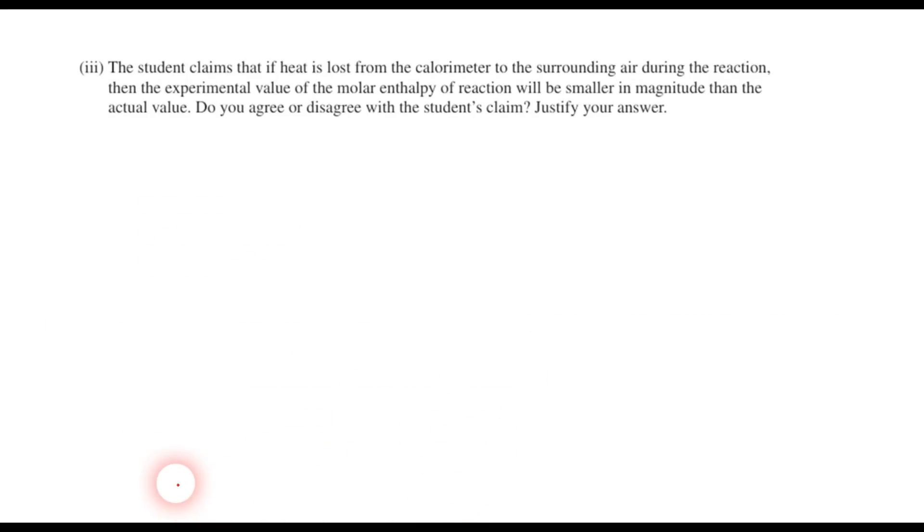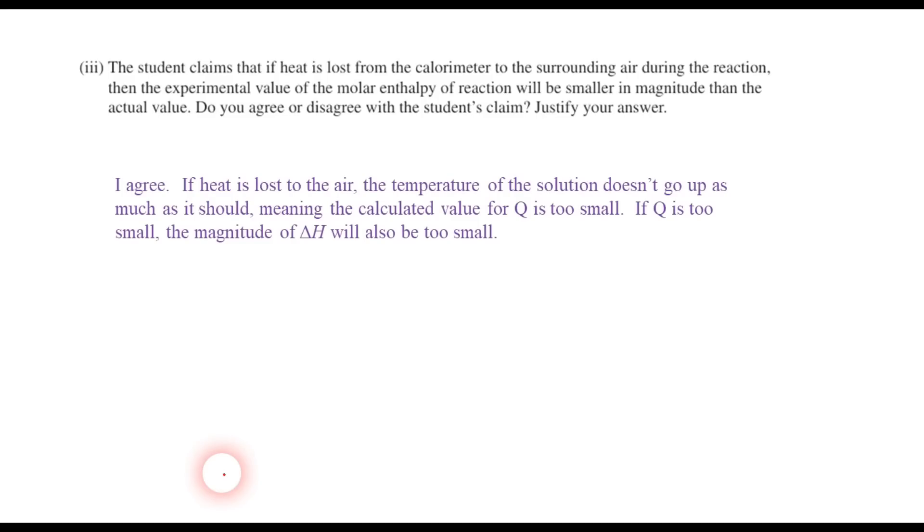Now, as we move on to E part 3, we have another question. It says the student claims that if heat is lost from the calorimeter to the surrounding air during the reaction, then the experimental value of the molar enthalpy of reaction will be smaller in magnitude than the actual value. Do you agree or disagree with the student's claim? Justify your answer. I would agree with this. And I would say that this is the case because if heat is lost from the calorimeter to the surrounding air, then the delta T, the change in temperature, is not going to be as high as it should be. And so if the temperature of the solution doesn't go up by as much as it should, that means that the value that we calculate for Q is also going to be too small. And if Q is too small, that's kind of a chain reaction. That means that the magnitude of delta H that we calculate is also going to be too small.